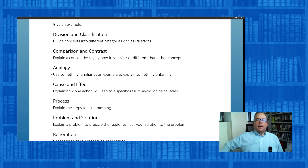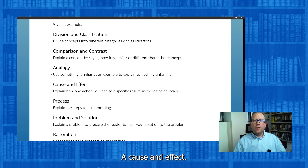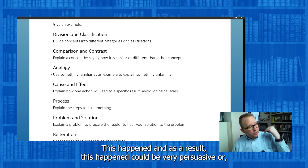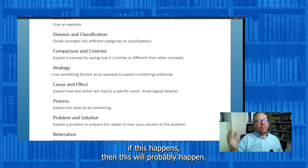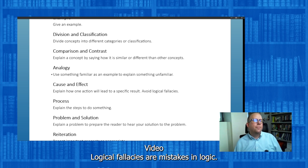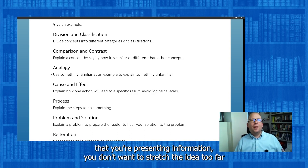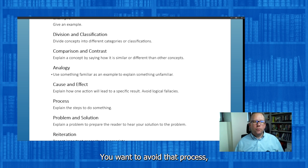Cause and effect: if this happens, then this happens. You could be talking about something that happened in the past — this happened, and as a result, this happened — which can be very persuasive. Or hypothetically in the future, if this happens, then this will probably happen. What you want to avoid are logical fallacies — mistakes in logic. When you're doing cause and effect, you don't want to stretch the idea too far or manipulate it in a way that it's no longer actually logical.